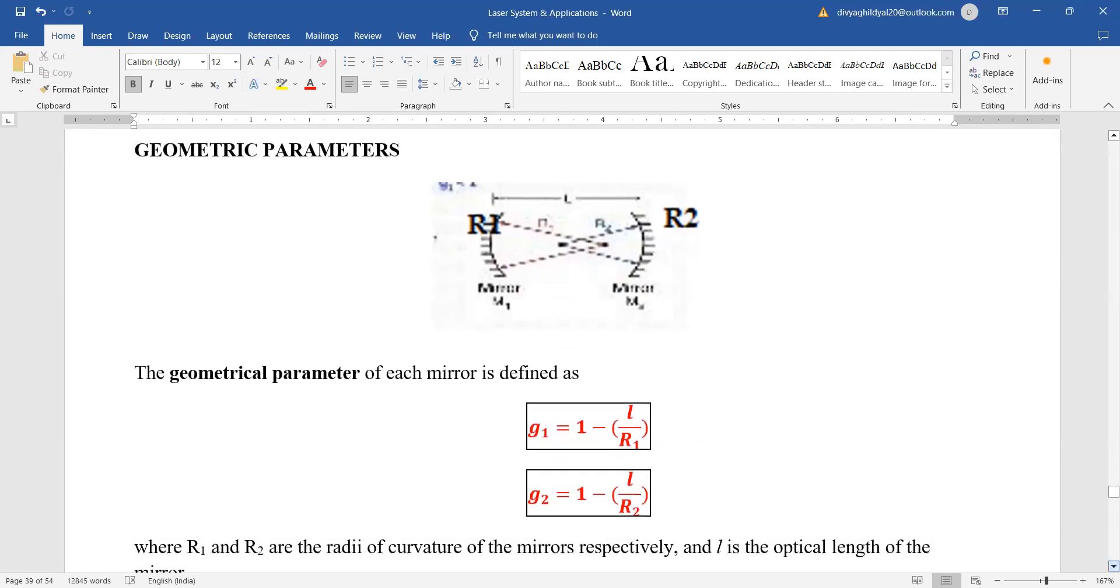So the geometric parameters of these two mirrors are numericals come on this formula: g1 is equal to 1 minus l upon r1 where l is this distance, r1 is the radii of curvature. g2 is 1 minus l upon r2.